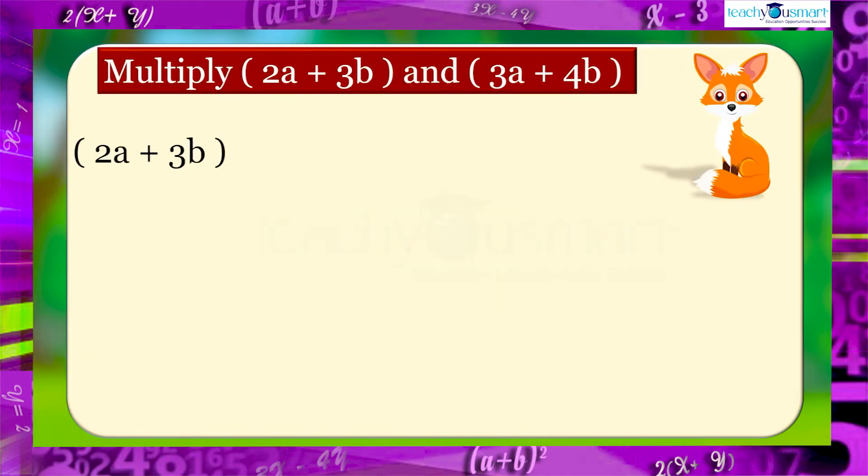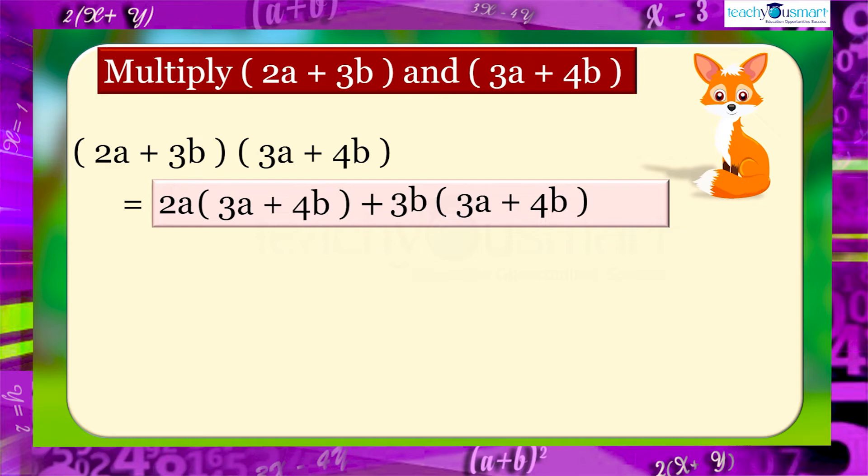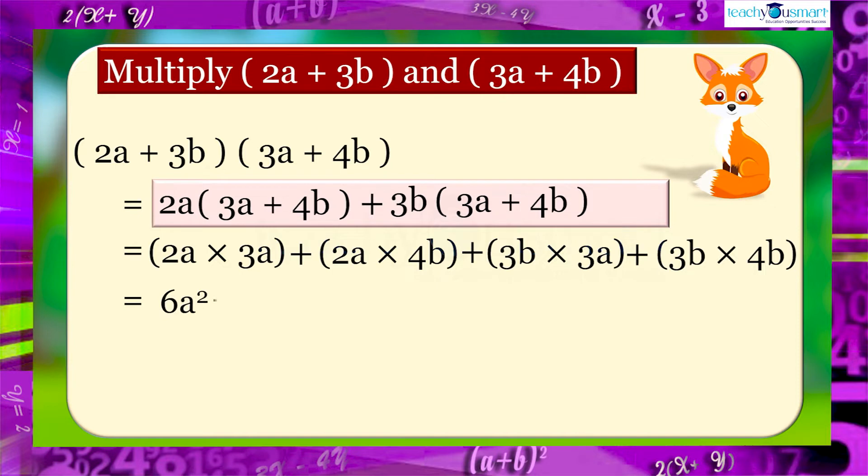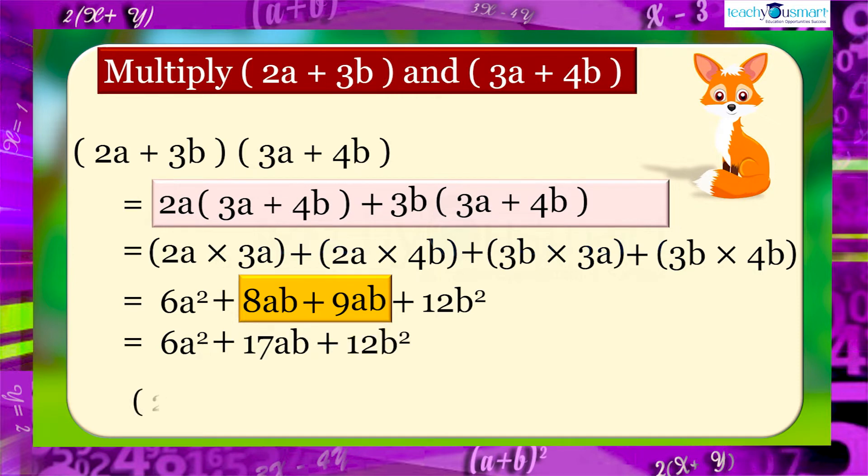That is (2a + 3b) multiplied by (3a + 4b) equals 2a multiplied by (3a + 4b) plus 3b multiplied by (3a + 4b) equals 2a × 3a + 2a × 4b + 3b × 3a + 3b × 4b equals 6a² + 8ab + 9ab + 12b². Add like terms together equals 6a² + 17ab + 12b².